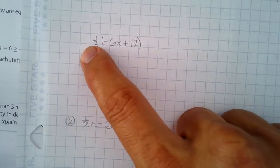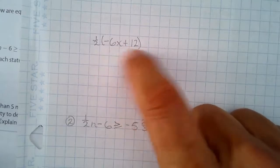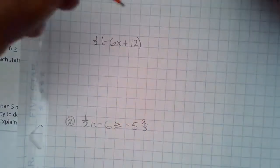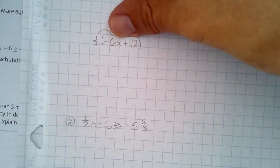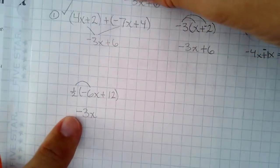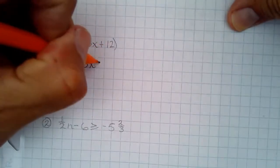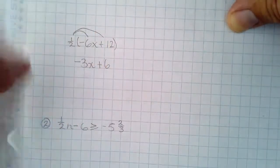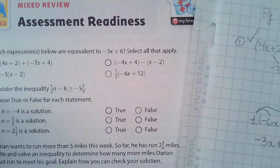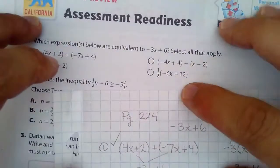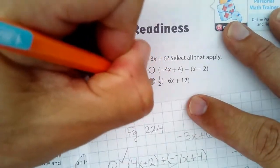This one has one half times both terms. One half times negative 6x is negative 3x — half of negative 6 is negative 3, and there's an x, so I'm on target. Then one half times 12 is 6. That hits the target too. So three options worked, and the one with negative 4x minus x did not, because it gave negative 5x rather than negative 3x.